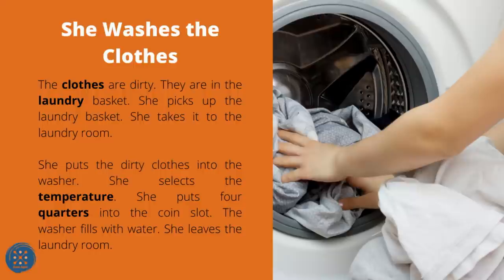She Washes the Clothes. The clothes are dirty — they are in the laundry basket. She picks up the basket and takes it to the laundry room. She puts the dirty clothes into the washer. She selects the temperature and puts four quarters into the coin slot. The washer fills with water. She leaves the laundry room.